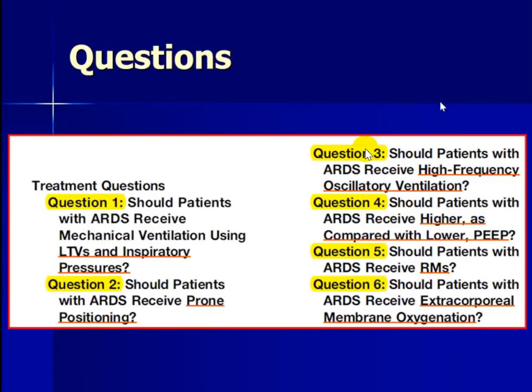These are the six questions that were posted on Facebook. Some of you may have the opportunity to further discuss this in the Q&A. Question one: should patients with ARDS receive low tidal volume ventilation and inspiratory pressures? Question two: should we prone patients with ARDS? Question three: the role of high-frequency ventilation. Question four: use of higher versus lower PEEP. Question five: use of recruitment maneuvers. And question six: the use of ECMO.